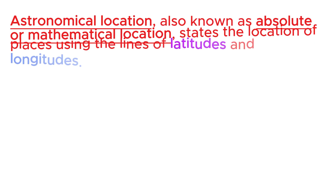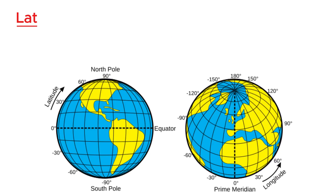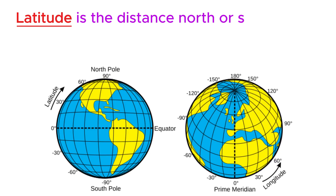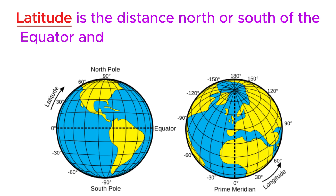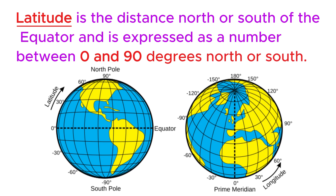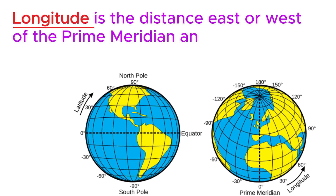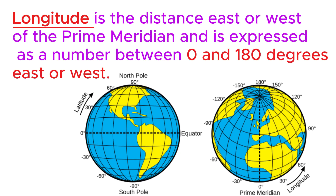Astronomical location, also known as absolute or mathematical location, states the location of a place using lines of latitude and longitude. Latitude is the distance north or south of the equator, expressed as a number between zero and ninety degrees north or south. Longitude is the distance east or west of the prime meridian, expressed as a number between zero and 180 degrees east or west.